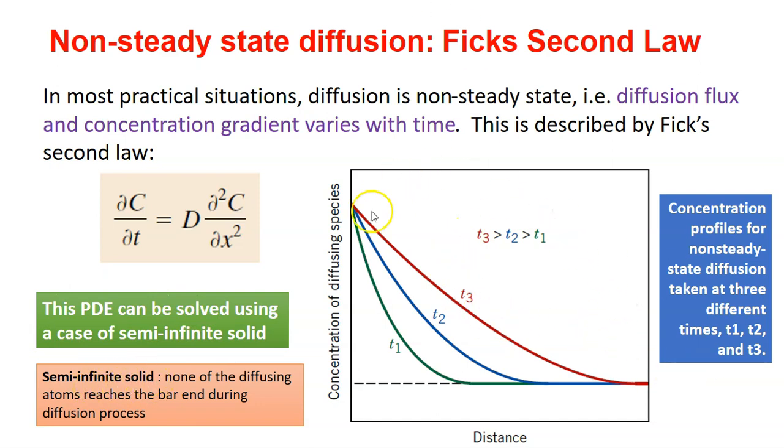This is a profile, concentration profiles showing the non-steady-state diffusion for different times T1, T2, and T3. And as you can see that the concentration of the diffusing species at these three different times are different, and the profiles are non-linear.